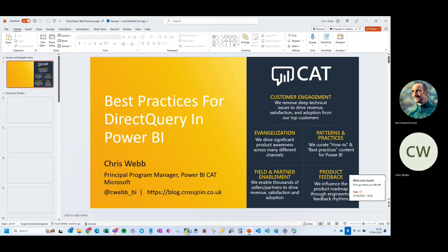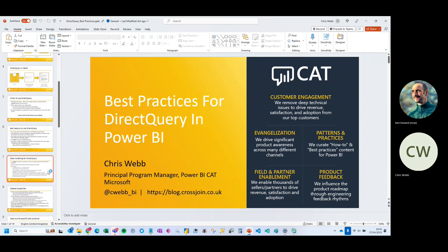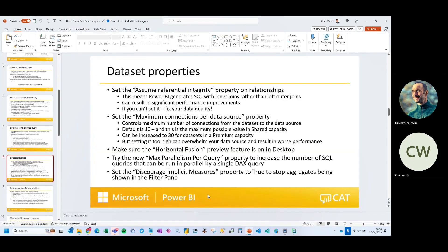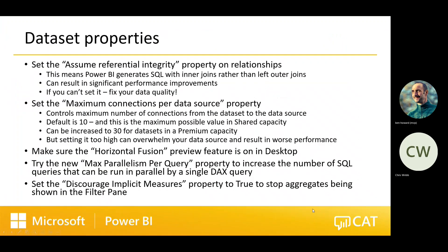There's also a feature called horizontal fusion, which is on by default in the Power BI service but needs to be turned on explicitly in Power BI Desktop as a preview feature. This simply allows Power BI to compress multiple SQL queries into a single SQL query where possible, getting more data in a single round trip. We've found this makes big improvements to performance. I don't know why it's not on by default in Desktop.